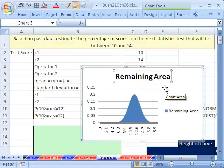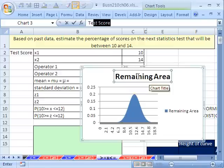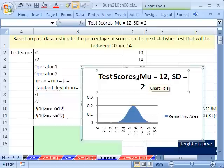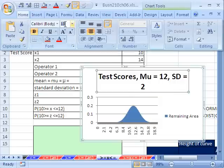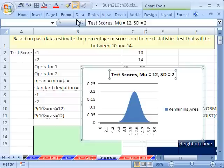I'm going to click here. The last two videos we did two different ways. I'm going to do a third way here. I'm just going to type test scores mu equals 12 SD for standard deviation equals 2 Enter. I'm going to go up to Home and 12 right there for font size.